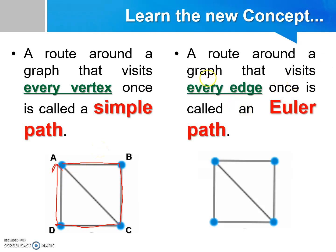However, a route around a graph that visits every edge once is called an Euler path. Let's label the points first. If it is an Euler path, then the path should be from E to F, then from F to G, next from G to H, then from H to E, and last but not least from E to G.